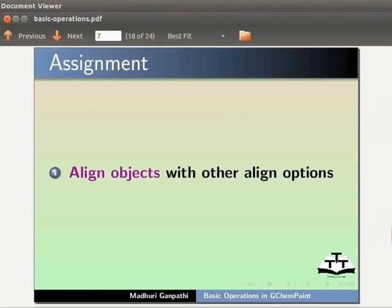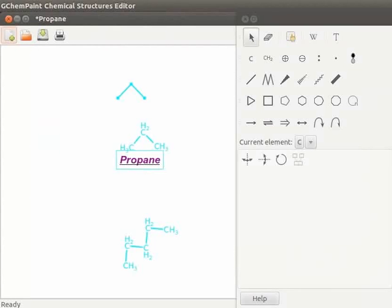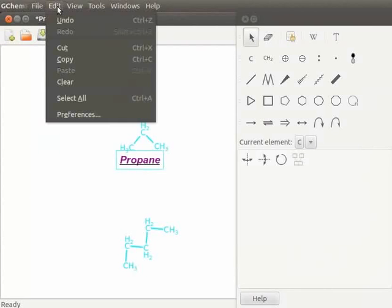Let us now learn to use Cut, Copy and Paste options. Go to Edit menu. It contains basic edit options like Cut, Copy, Paste and Clear. The common shortcut keys for these options - Ctrl X to Cut, Ctrl C to Copy, Ctrl V to Paste - will work in GChemPaint as well.